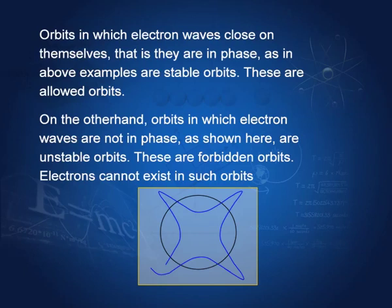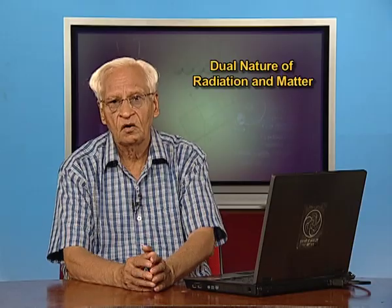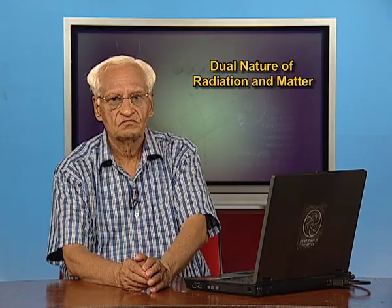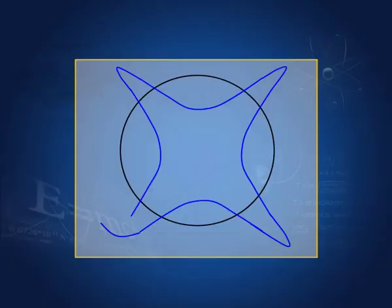Bohr's postulate that electrons can have only certain orbits and these orbits are stationary so that electrons do not radiate is now justified by the de Broglie principle. If these waves do not form stationary waves — if there is a phase difference so the wave does not close on itself — then that orbit is a disallowed or forbidden orbit. Only those orbits where the waves are in phase and form a stationary wave are allowed orbits.